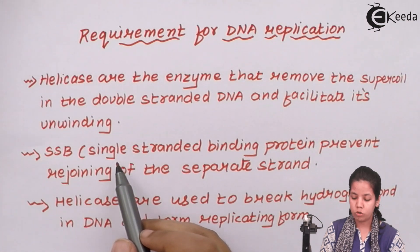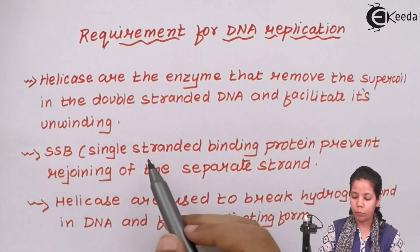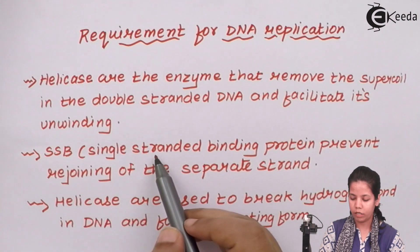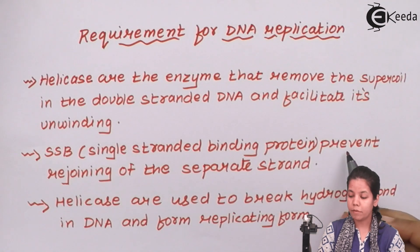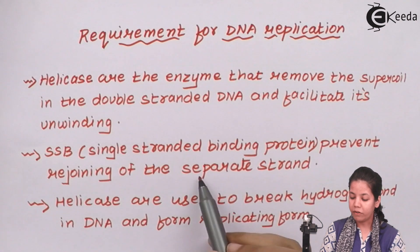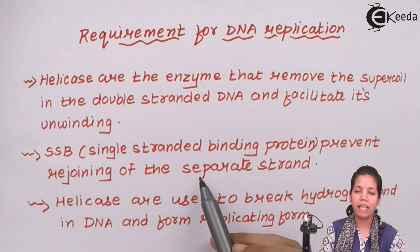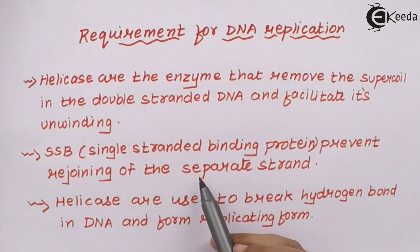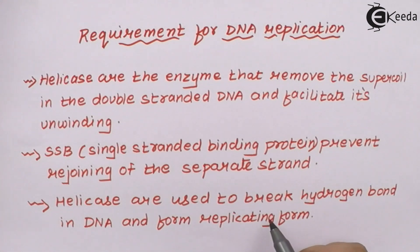Once helicases act, single-stranded DNA could re-coil and re-pair among themselves. To prevent that, we have an enzyme called SSB — single-stranded binding proteins — which prevents the rejoining of separate strands. SSB comes and binds once the function of helicases is done. Finally, helicases break the hydrogen bonds in the DNA and form the replicating fork.